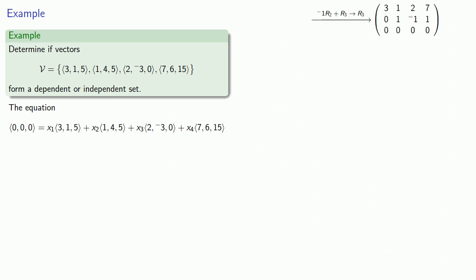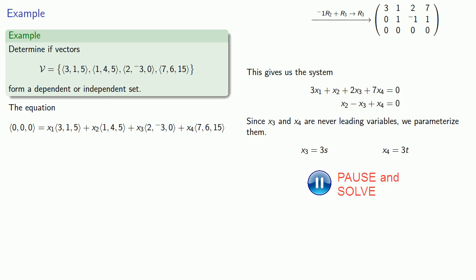So our system in row echelon form will be 3x1 plus x2 plus 2x3 plus 7x4 equals zero, and x2 minus x3 plus x4 equals zero. Since x3 and x4 are never leading variables, we can parameterize them, and back substitution will give us our solutions.